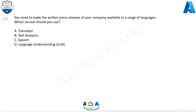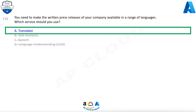Question 110. You need to make the written press releases of your company available in a range of languages. Which service should you use? A. Translator. B. Text analytics. C. Speech. D. Language understanding, LUIS. Answer: A. Translator is a cloud-based machine translation service you can use to translate text in near real-time through a simple REST API call. The service uses modern neural machine translation technology.